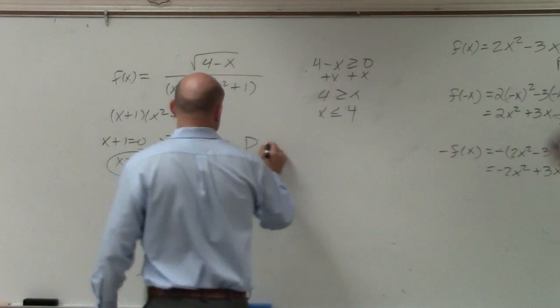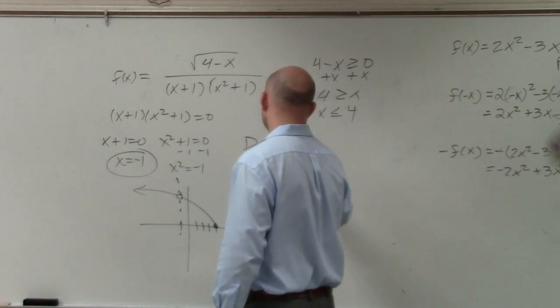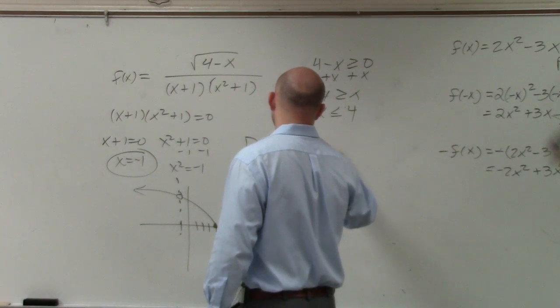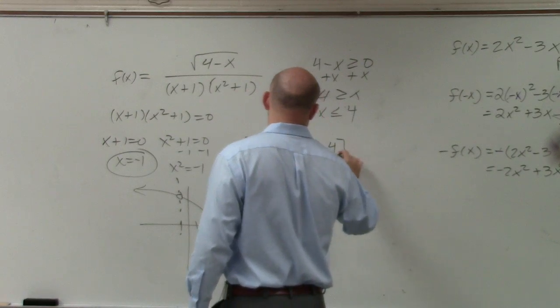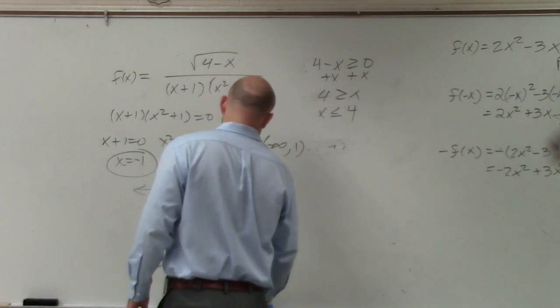So we can say the domain is going to be negative infinity to negative 1, and then negative 1 comma 4.